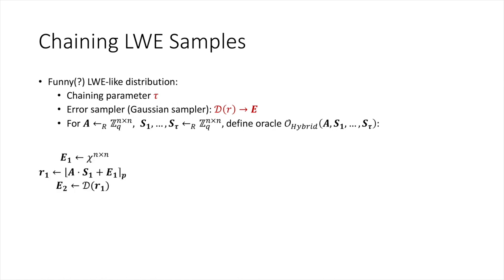The hybrid oracle produces the following distribution. First it samples a noise matrix E1 from the noise distribution and computes A times S1 plus E1, as an LWE sample. It then rounds the result down and feeds it into the error sampler to generate E2 for the next iteration. Then it computes A times S2 plus E2.